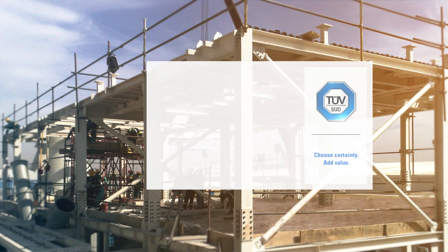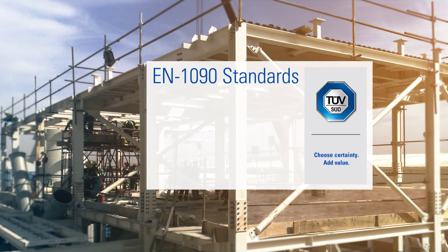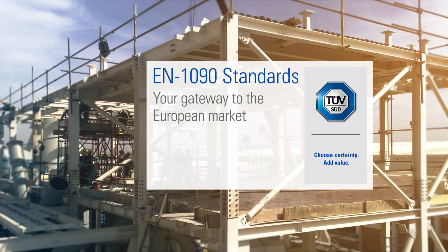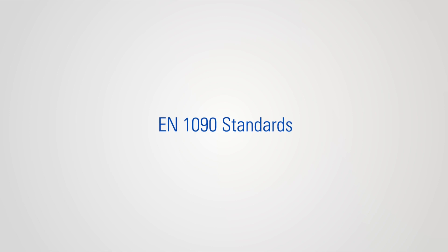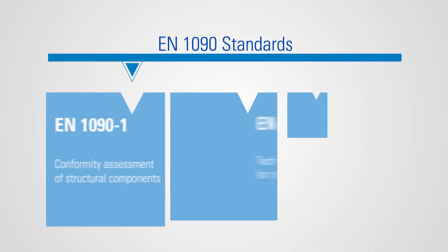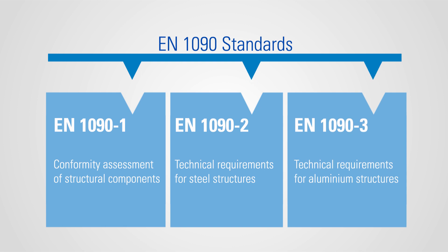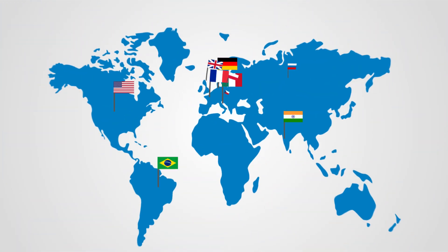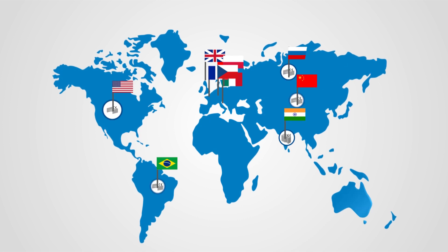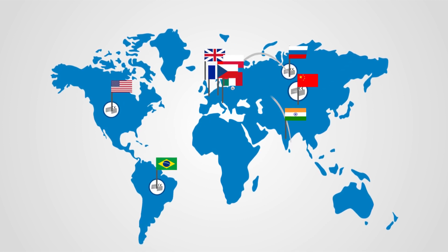As a manufacturer or importer of steel and aluminium construction products, understanding the EN 1090 standards is important in helping you gain access to the European market. Consisting of three parts, the standards govern the execution of steel and aluminium structures. By conforming to these standards, you will be able to affix the CE mark to your products, which is mandatory before they can be placed on the European market.